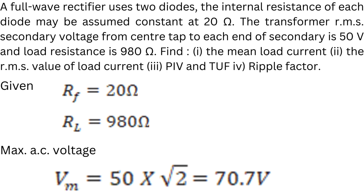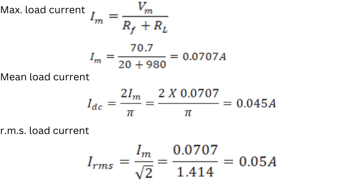Given: Rf = 20 ohms and RL = 980 ohms. The transformer RMS secondary voltage from center tap to each end is 50 volts, so maximum voltage Vm = 50 × √2 = 70.7 volts. Maximum load current Im = Vm / (Rf + RL). In this case only one diode is in conduction at any instant, so Im = 70.7 / (20 + 980) = 0.0707 amperes.